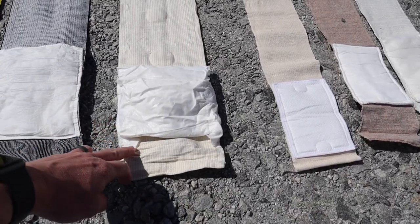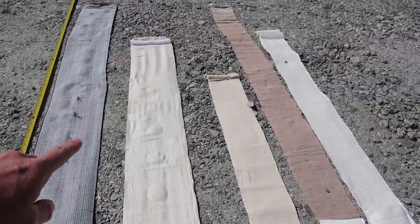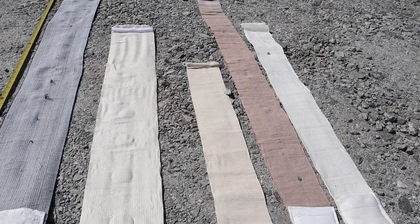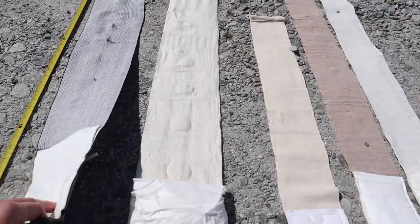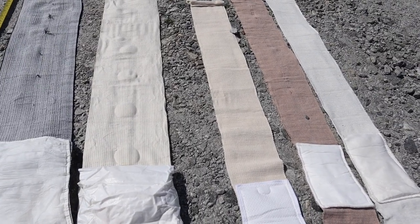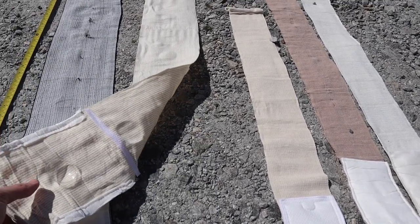This pressure bandage right here is the Elias. You can see the distance on it is the six inch as well. The Israeli comes with your pressure plate. The Elias comes with extra gauze and it's an eye cup there.